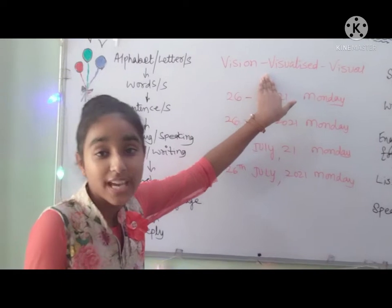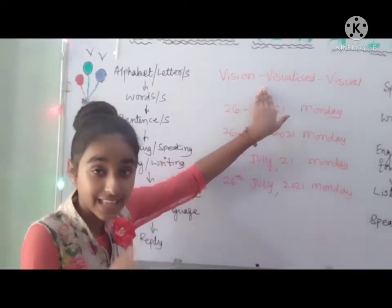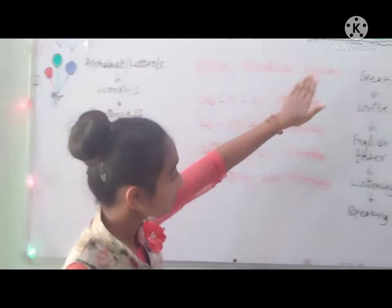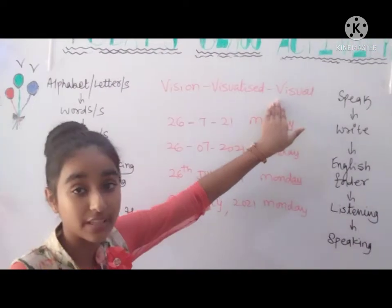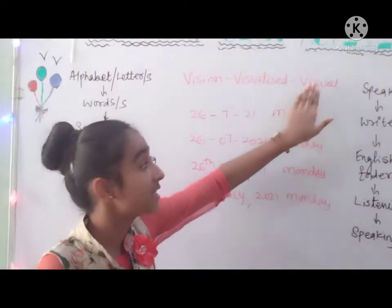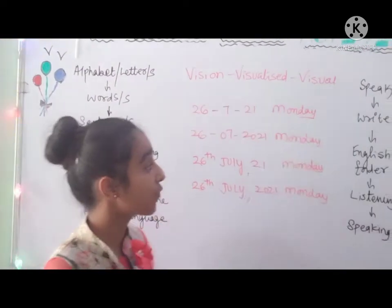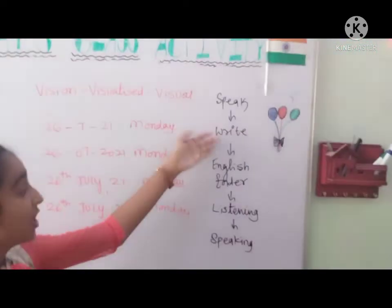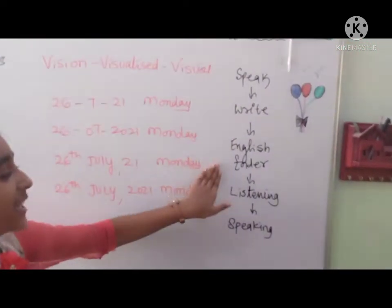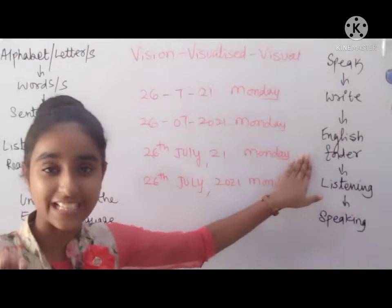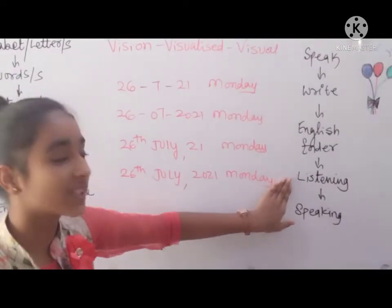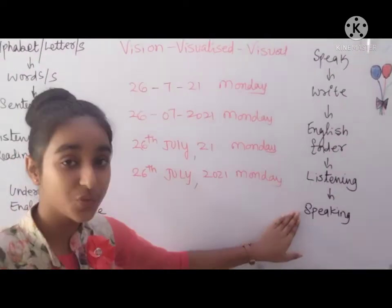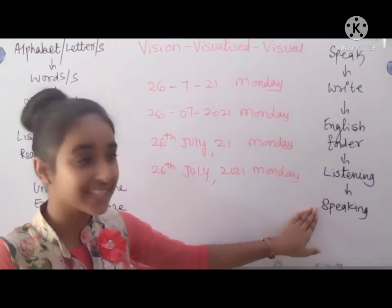Then we try to visualize it — like B is like that, C is like that, etc. Then we see it visible and we see it with our eyes. So first we try to speak it, and then we try to write it. So our English word is created. Then we are able to listen to everything very carefully and we are able to speak everything very nicely.